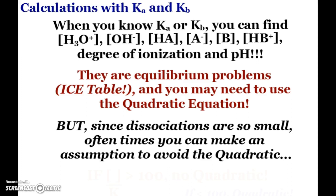So calculating Ka or Kb, not as important as doing calculations with them, since we can easily obtain them. When you know the Ka or Kb, you can be asked to find hydronium hydroxide concentration, the concentration of the acid or your conjugate base, concentration of the base or the conjugate acid. You can find the degree of ionization and pH. They're all just equilibrium problems using our ice tables.